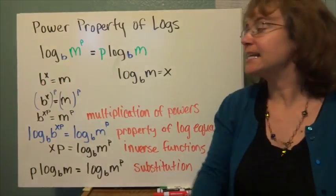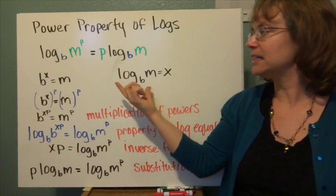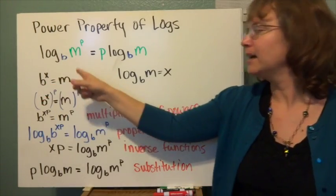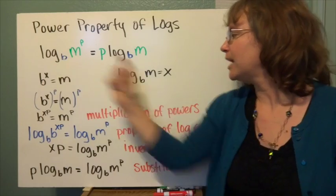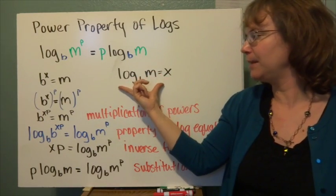I'm going to let b to the x equal m. Then I'm going to write it in logarithmic form over here. I'm going to use this a little bit later. So rewriting that, I have log base b of m equals x, and I'm keeping it here for later.